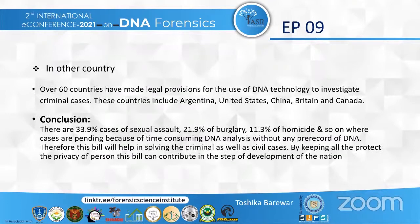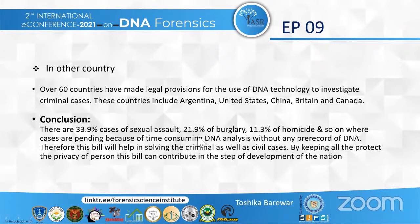What about other countries? There are 60 countries where DNA technology is used for investigation, including the United States, China, Canada and Argentina. There are other countries where DNA profiling is allowed only in serial criminal cases, such as Germany, France and the Netherlands. This provision exists in India also — by taking prior permission from the court, biological samples of suspects in criminal cases are taken and DNA profiling is done.